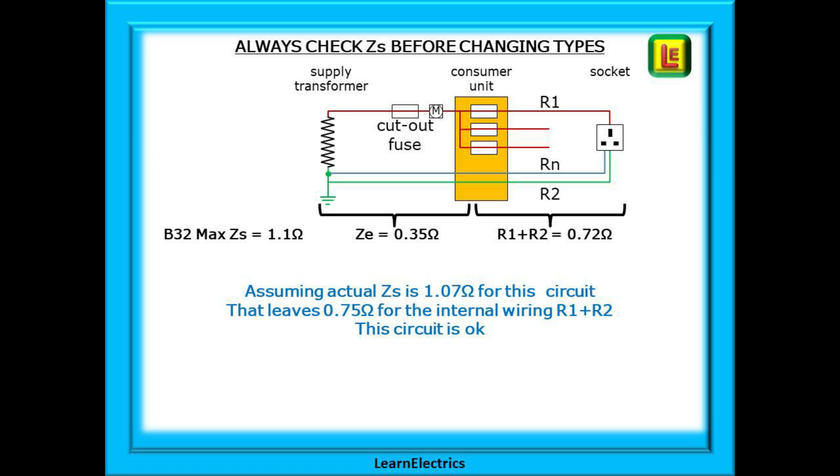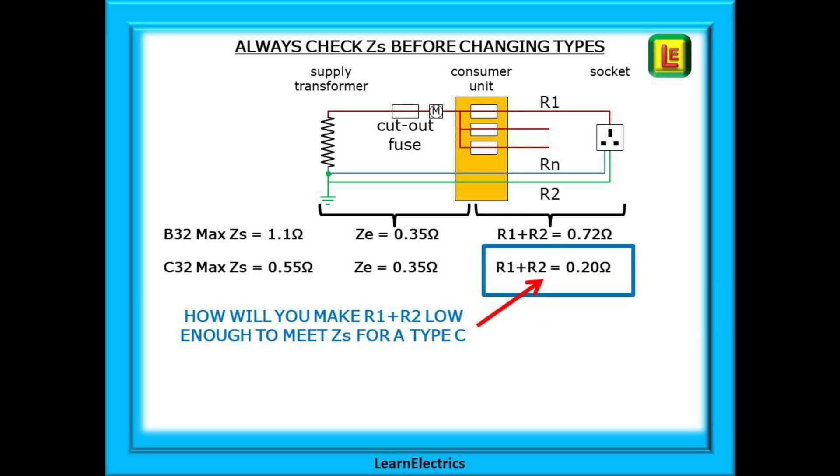Here is an example circuit. A B32 MCB has a maximum measured ZS of 1.1 ohms and let's say that the actual measured ZS is at 1.07 ohms. This is made up of ZE at 0.35 ohms and R1 plus R2 at 0.72 ohms. Now change to a C32 MCB. The maximum ZS is 0.55 ohms. ZE is still 0.35 ohms. That leaves just 0.2 ohms for R1 plus R2.